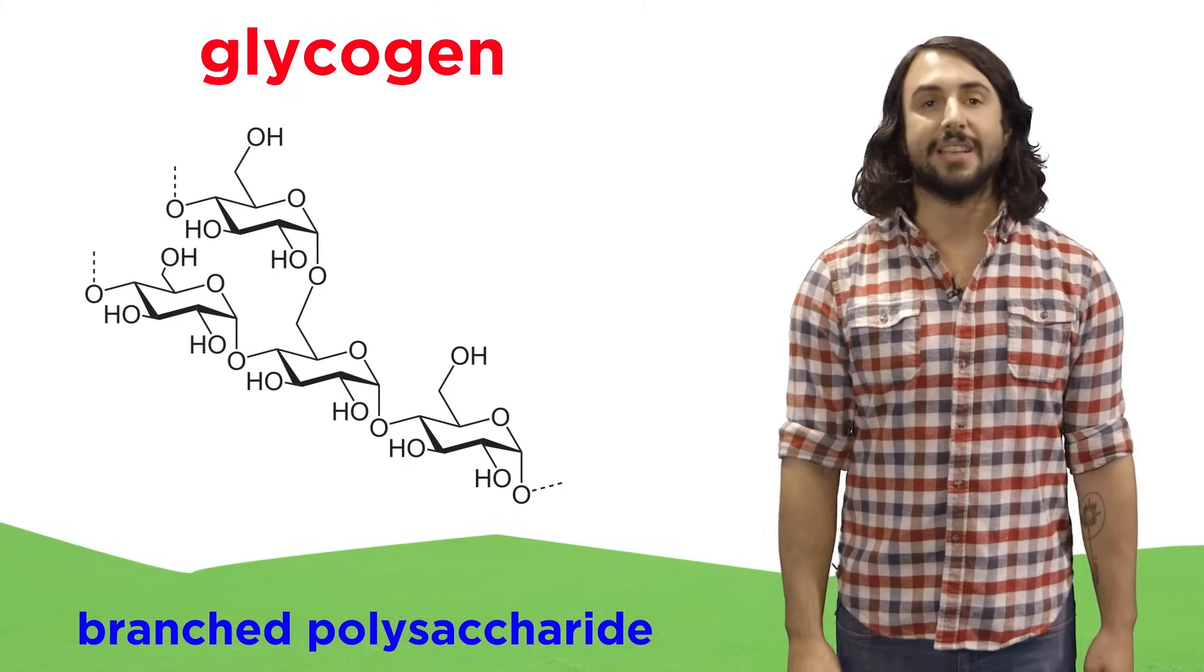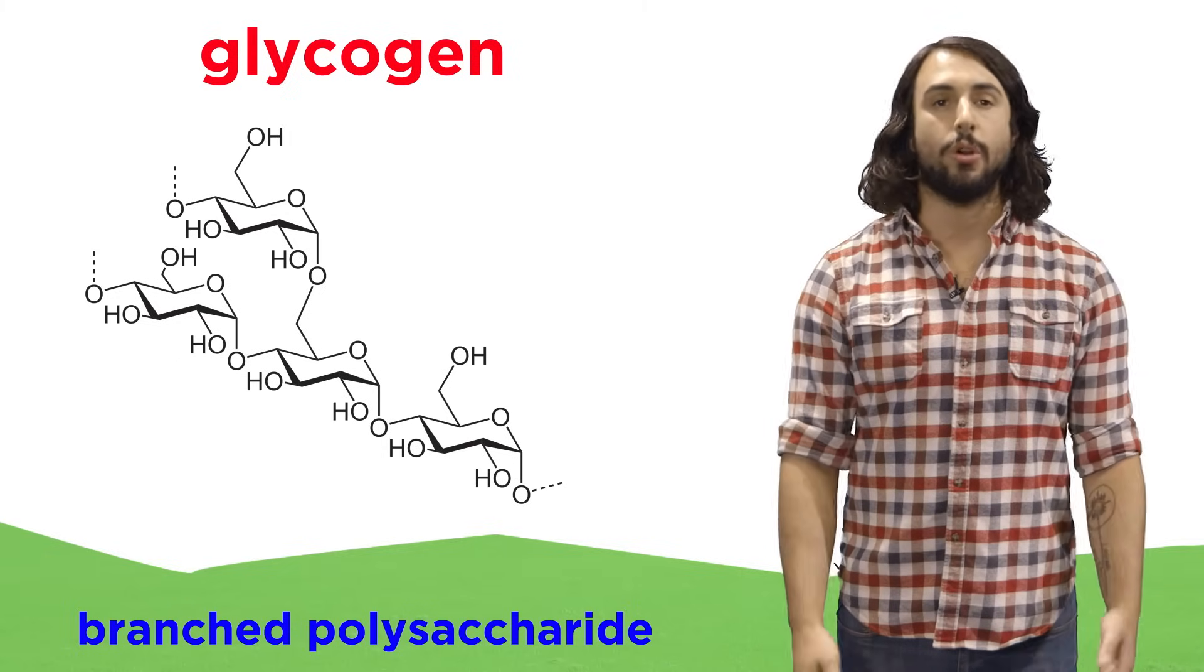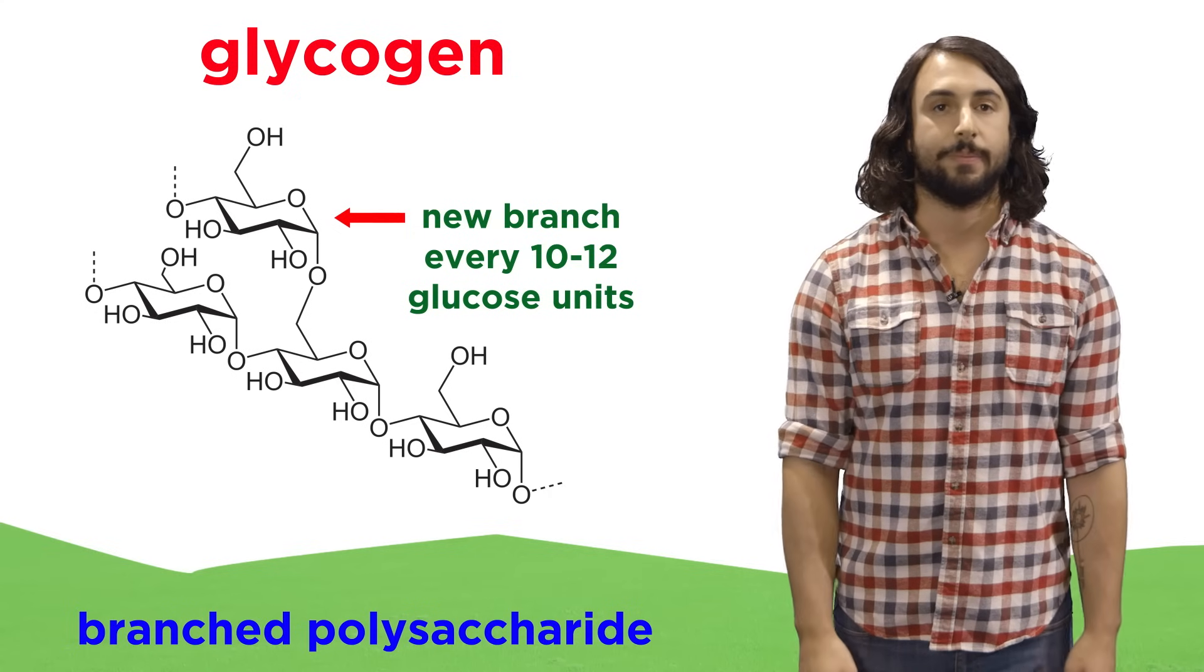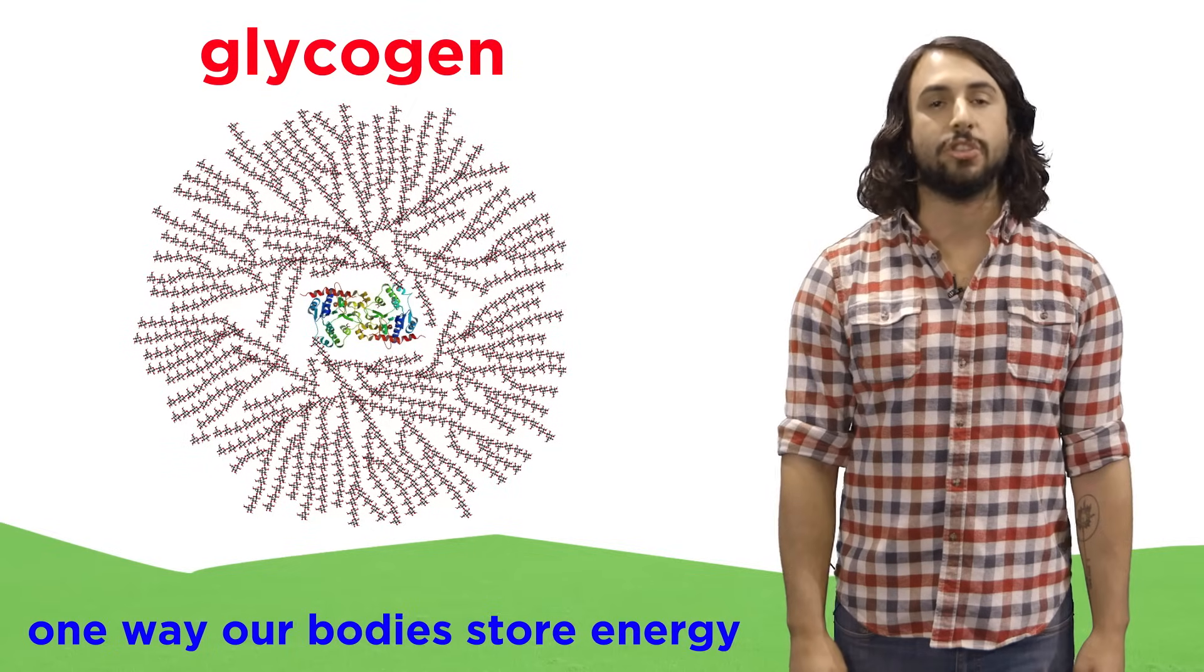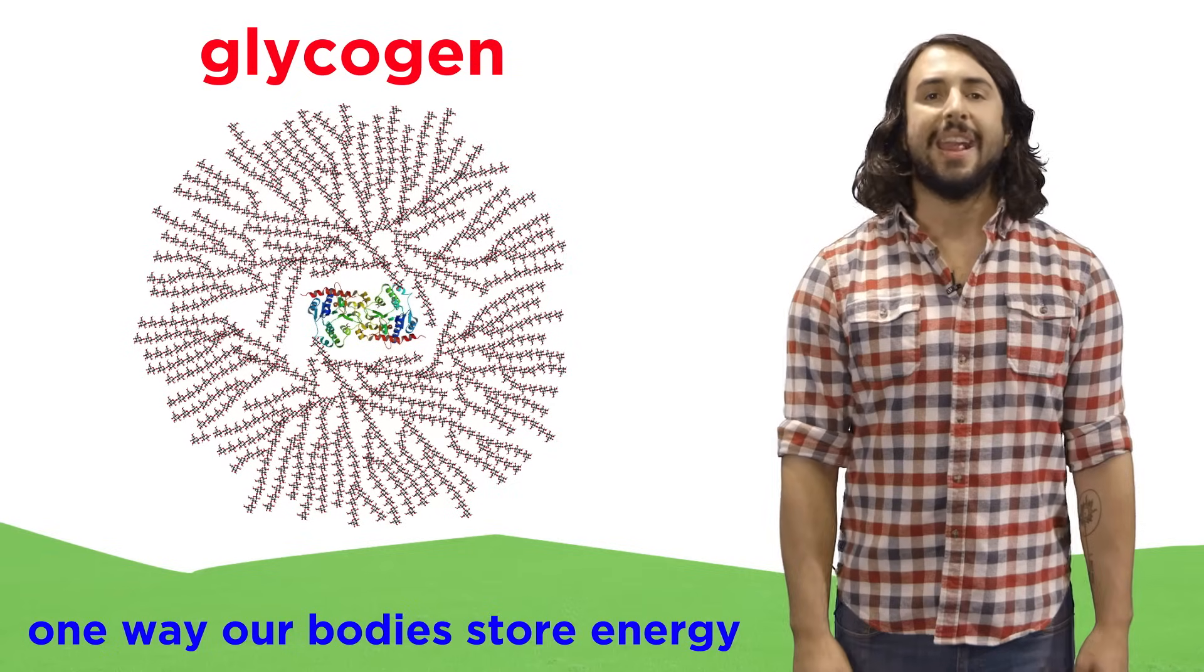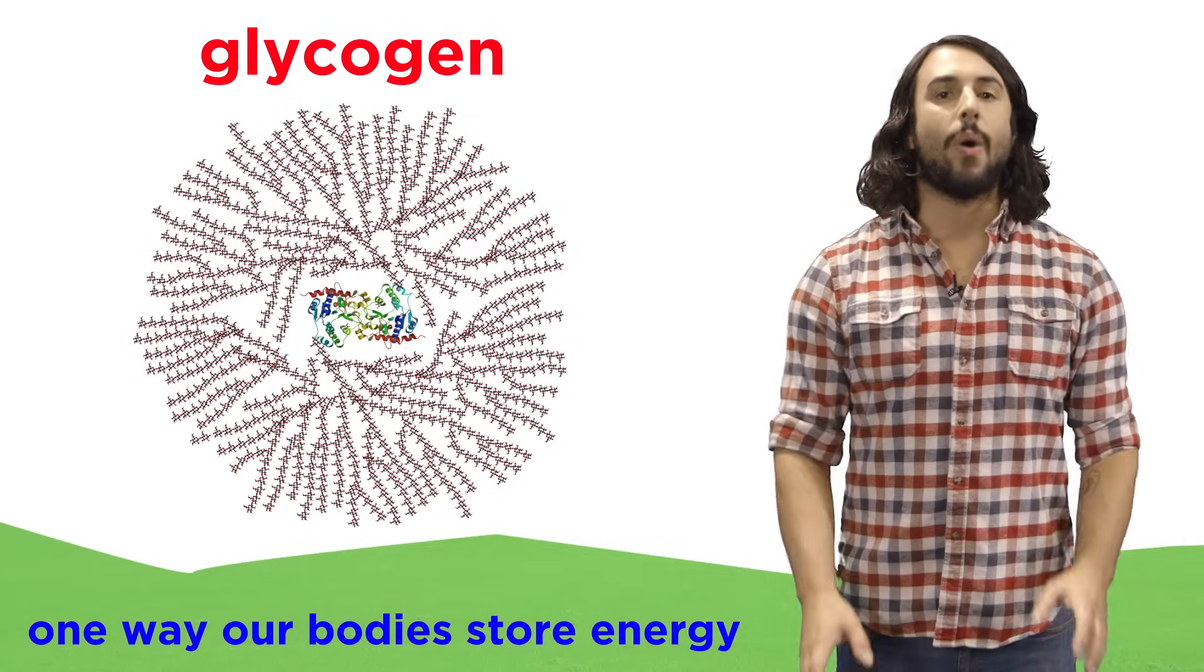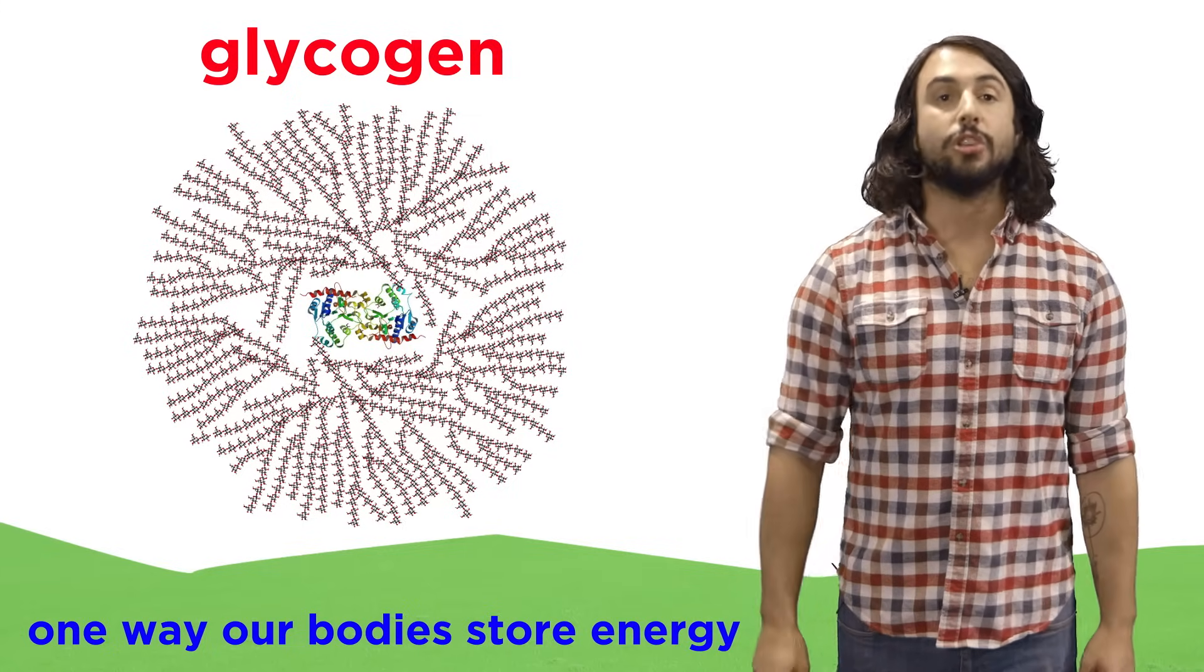Similar to amylopectin is glycogen, which also has alpha-1,4 linkages between glucose molecules, but glycogen has even more branching, occurring every 10 to 12 glucose units. Glycogen is an important way that we humans store energy inside our cells, and enzymes will break down some of this glycogen into individual glucose molecules in times of strenuous activity or in between meals, while other enzymes can add glucose units back to the chain to store them for later.